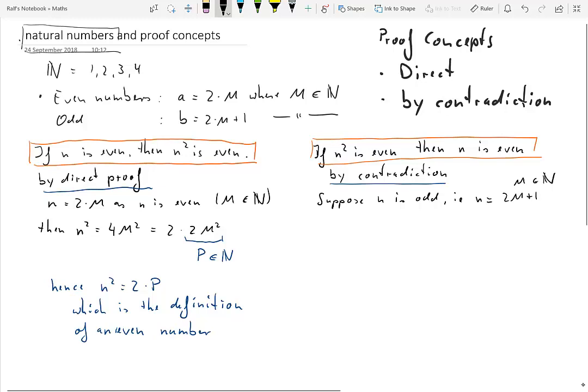then n can be represented by 2 times m plus 1 where m is an element of the natural numbers. So if that is the case, then we can re-express n squared as 2 times m plus 1 squared. And we know that this translates to 4m squared plus 2 times 2m plus 1.